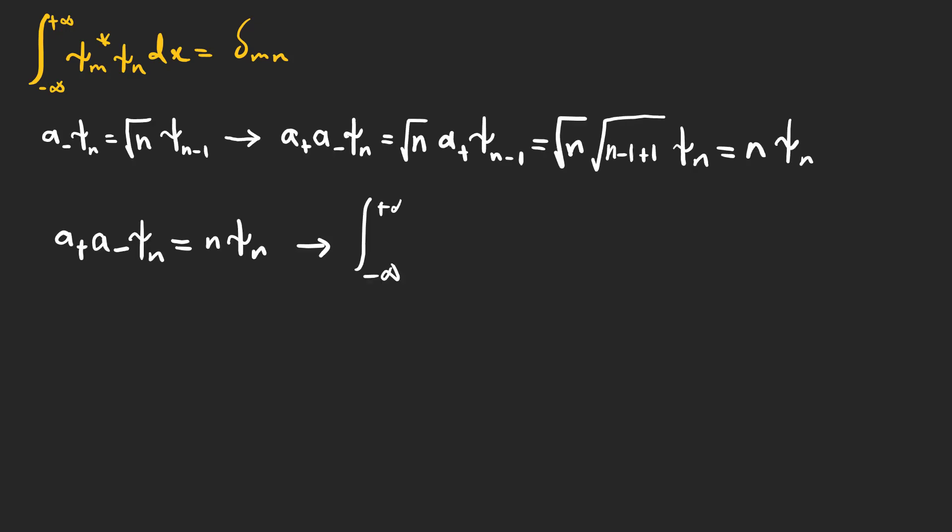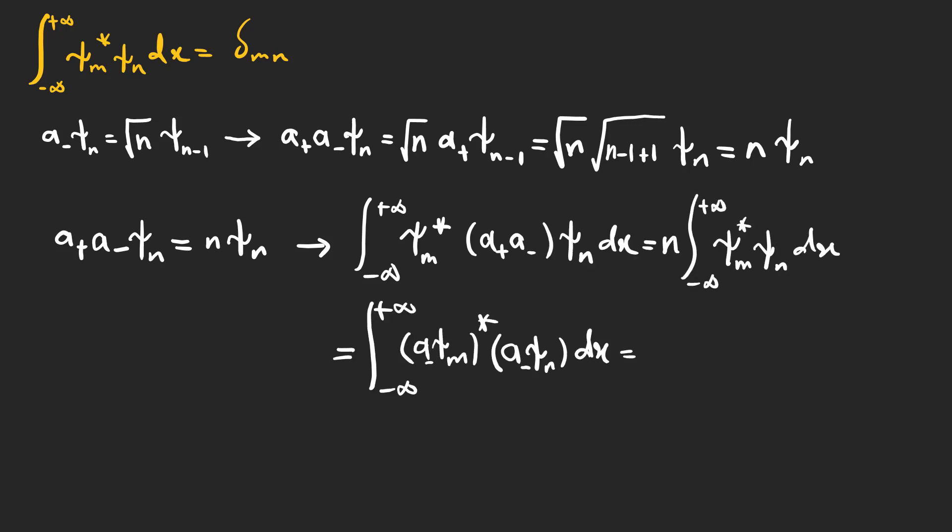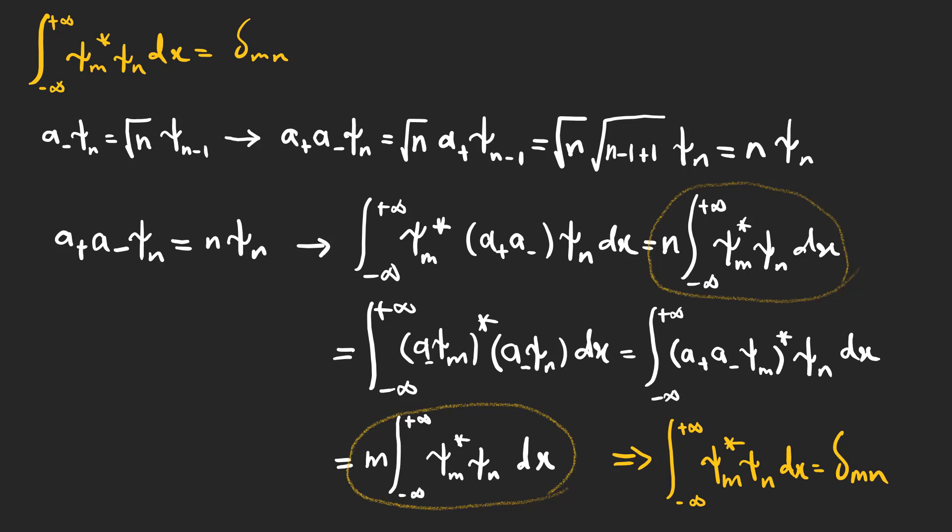We want to prove that these stationary states for the harmonic oscillator are orthogonal. And based on these expressions, either m must be equal to n or the integral is zero. So, we have this condition, and these states are orthogonal.